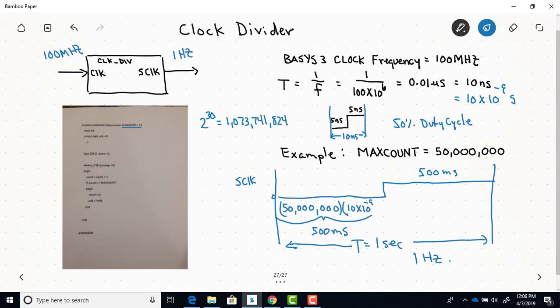So this is a handy piece of code here to have because if you want to divide, you know, any input frequency by a certain factor to get some lower output frequency, you just need to figure out what max count you need. And since the max count's a parameter, you don't change anything in the lower level module. If you want to divide by some other factor, you just change it in your top level module, just like any parameter that you use.